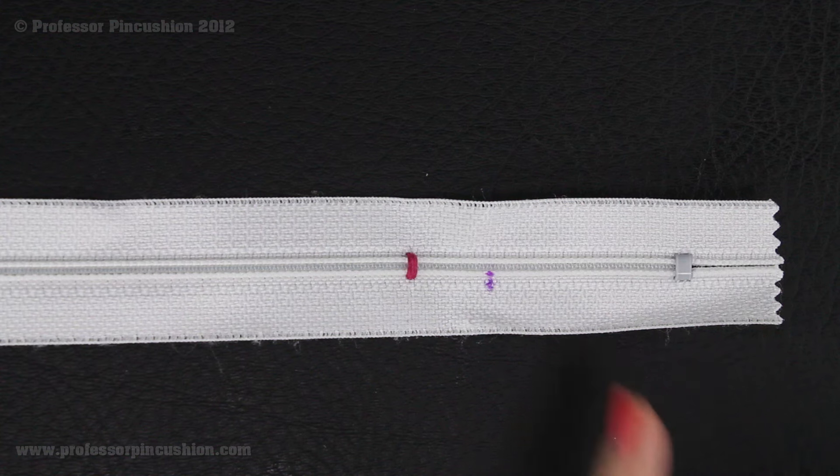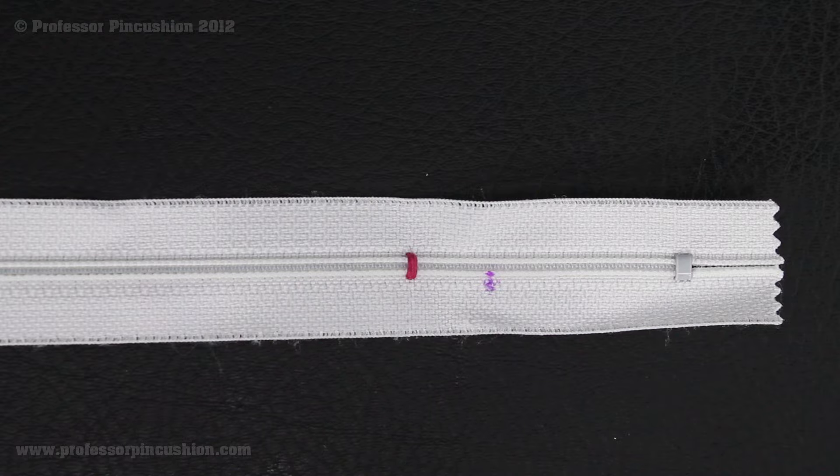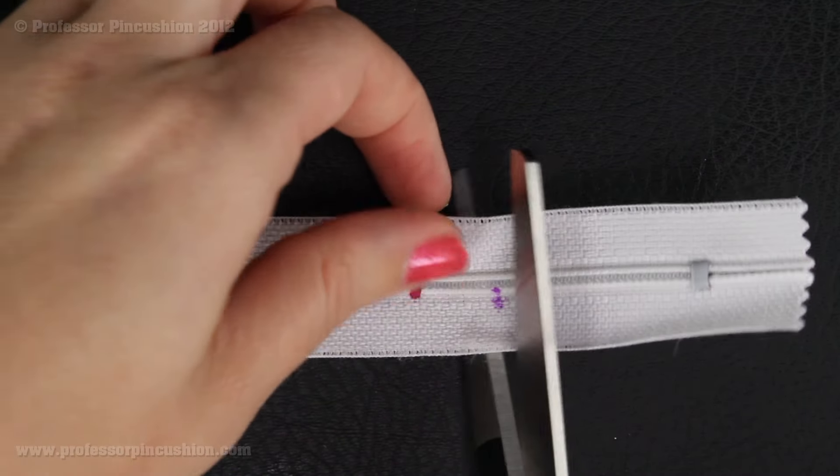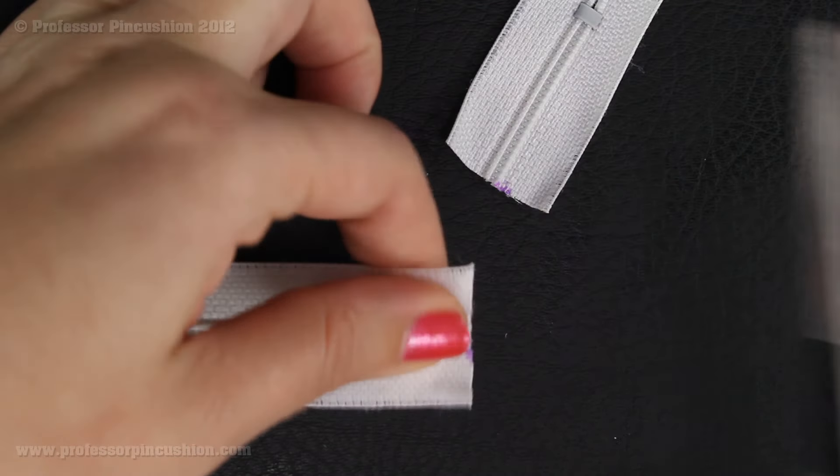So this is where we're going to cut with our scissors. That means the zipper teeth are going to extend a half inch past where we stitched. Zipper teeth are made out of plastic, so it should be okay for you just to use your regular scissors to cut through it just like that.